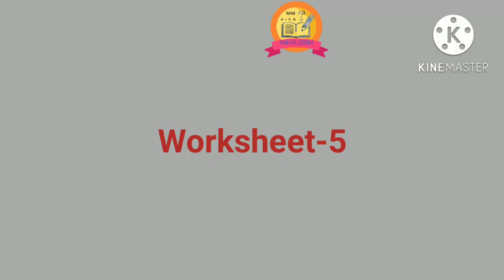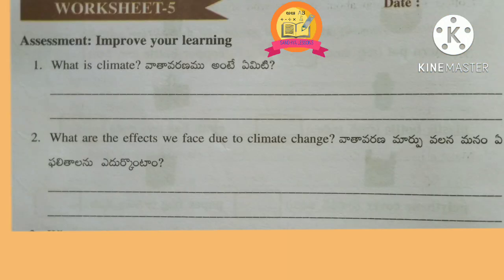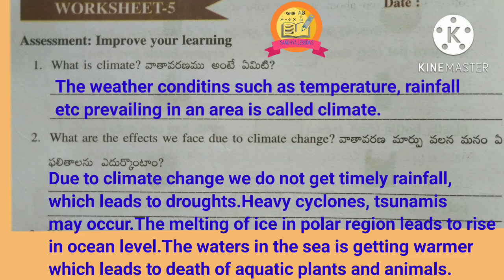Worksheet 5. First question — what is climate? Second question — what are the effects we face due to climate change? Due to climate change, we do not get timely rainfall which leads to droughts. Heavy cyclones and tsunamis may occur. The melting of ice in the polar region leads to a rise in ocean level. The water in the sea is getting warmer, which leads to the death of aquatic plants and animals.